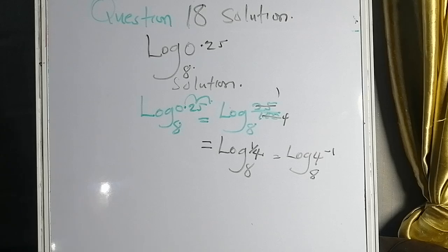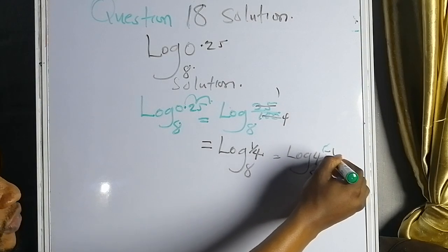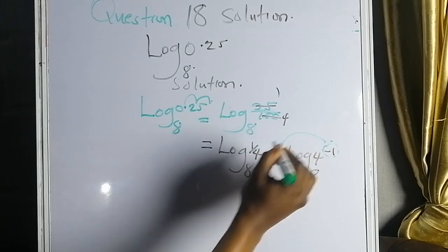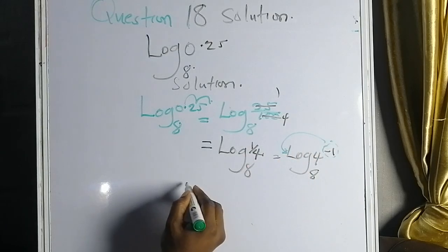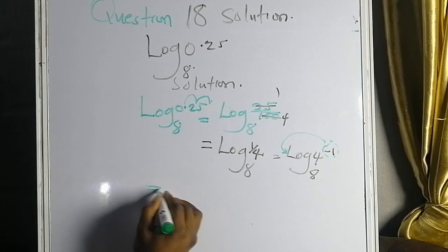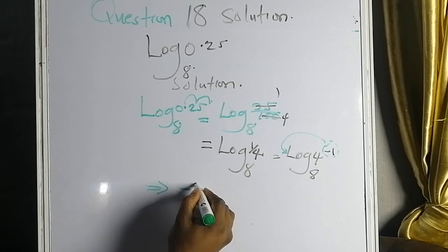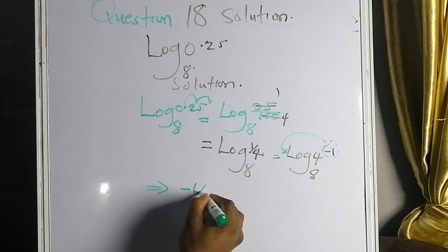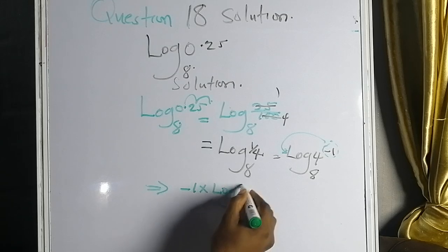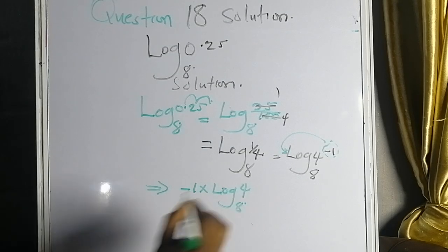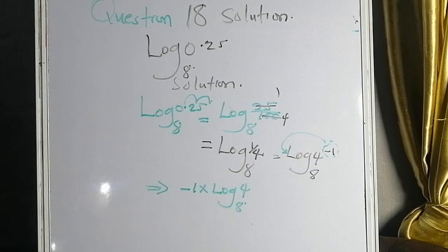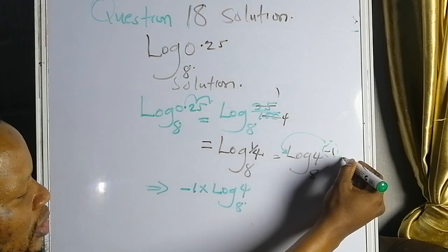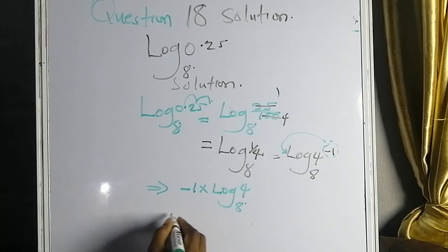Don't forget, from the power law of logarithms, you can bring the exponent to the front of the log. This implies that we have minus 1 times log 4, base 8.